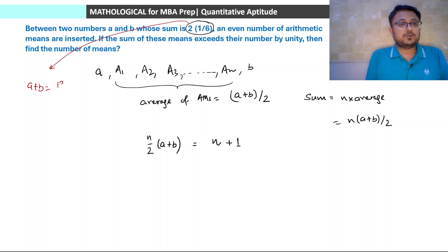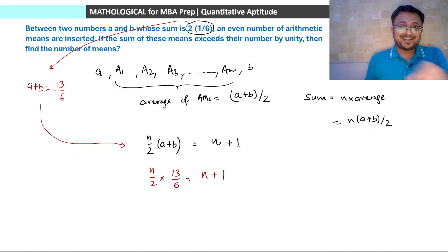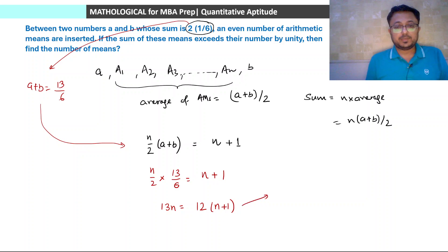A plus B is equal to 13/6. Put this into the equation: n/2 × 13/6 = n + 1. Do not cancel n directly because n + 1 is there. So 13n = 12(n + 1), giving n = 12. So the number of arithmetic means is 12. Very easy question once you understand it. If you don't, you'll get stuck on the language.